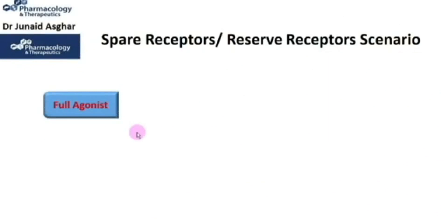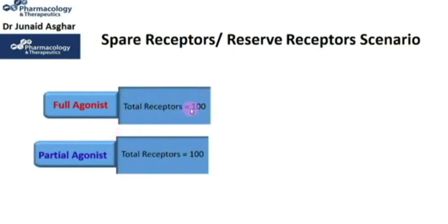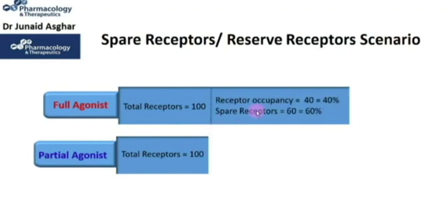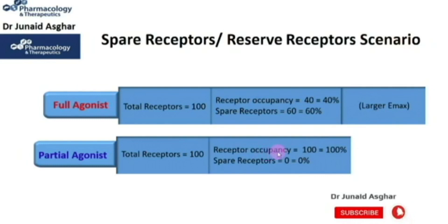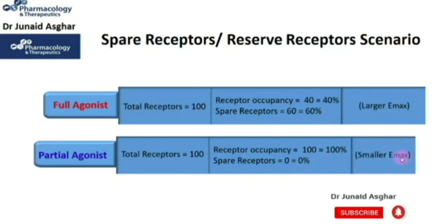Let's consider a scenario in which we have a full agonist and a partial agonist, with a total of 100 receptors available in each system. The full agonist only occupies 40 out of 100 receptors — 40% — so the percentage of spare receptors is 60%, and even then the efficacy or Emax will be at its maximum. For a partial agonist, the total receptor occupancy is 100% with no receptor reserve or spare receptors available. However, the partial agonist will only be able to produce a submaximal or partial effect with a smaller Emax value as compared to the full agonist.